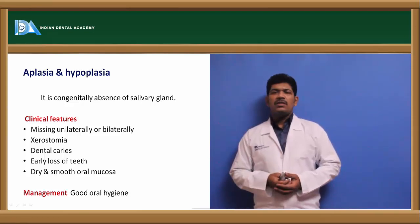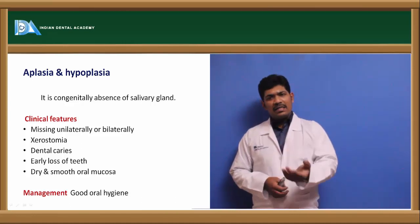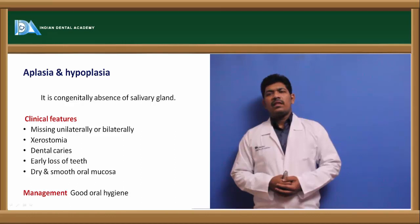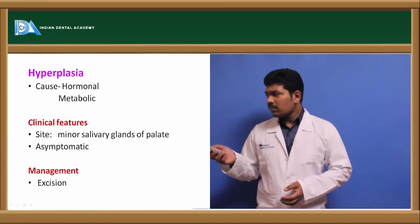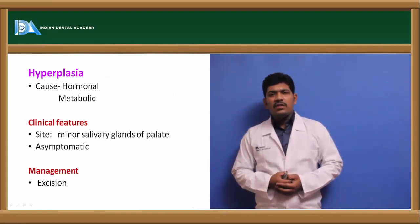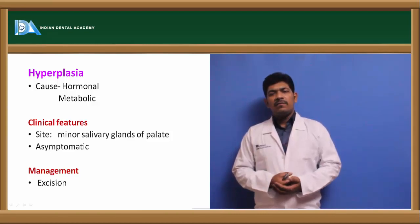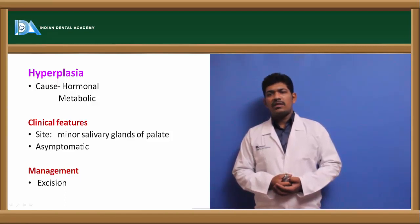In such patients, we normally suggest maintaining good oral hygiene and, in severe cases, using salivary substitutes. Conversely, hyperplasia — a condition where the gland is bigger than normal — results in saliva quantity much more than normal.